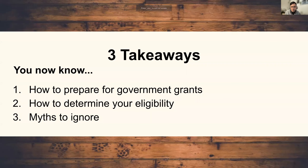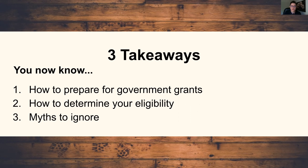These are the three major takeaways from this workshop. First, you now know how to prepare for government grants. Second, how to determine your eligibility — to make sure when you're looking at a grant, you know if you're a good fit, as it's going to be worth anywhere from 40 to 200 hours of your time. And of course, you've also learned the myths to ignore — this isn't free money, you won't get that big check up front, and you need to make sure you have the capacity to run and manage these grants.